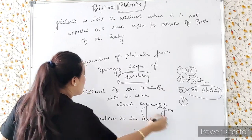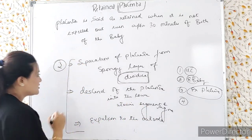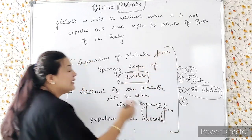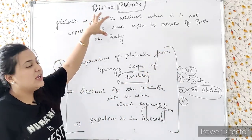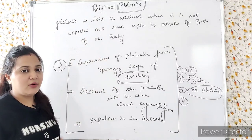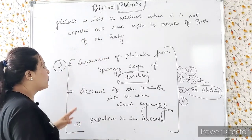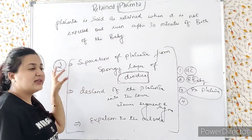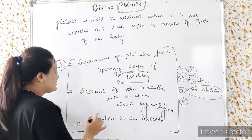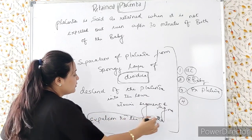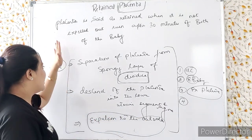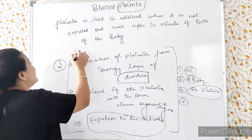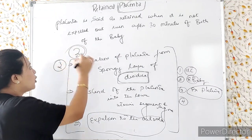These three are the normal physiological processes. If any interference is created in these three, then the placenta will be retained right there — it will not separate, will not descend, and therefore expulsion of the placenta will also not occur.